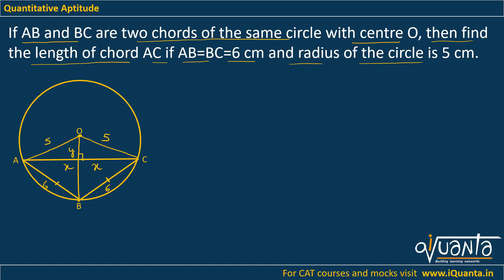So now using Pythagoras theorem I can say that X square plus Y square will be equal to 5 square in triangle. Let this be M. In triangle OMC we will get this equation.